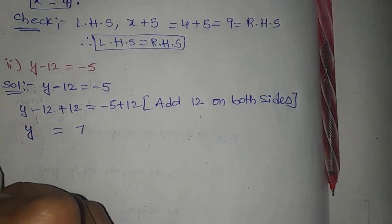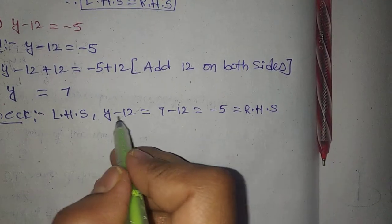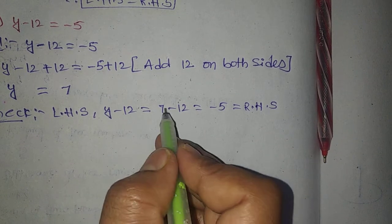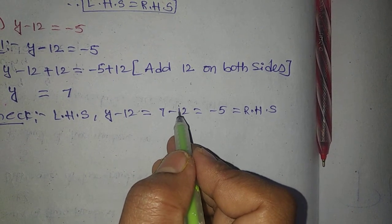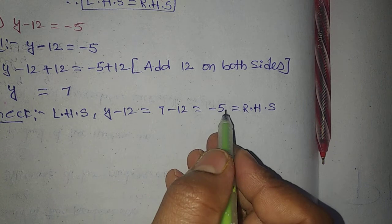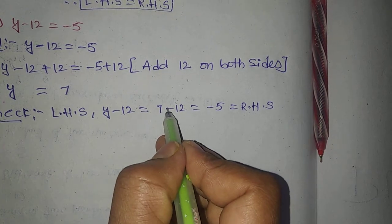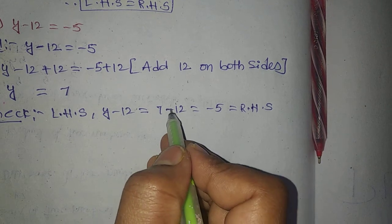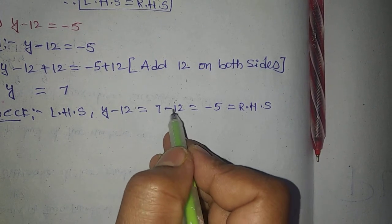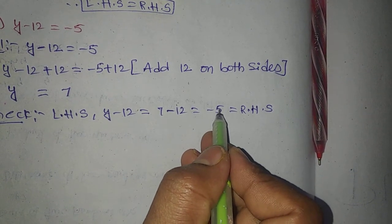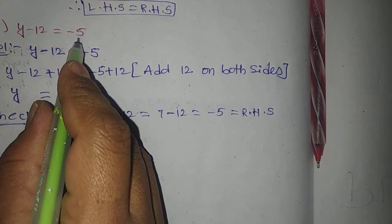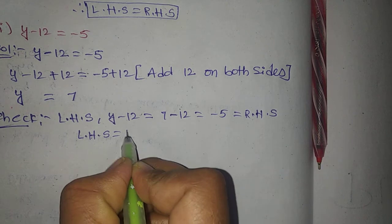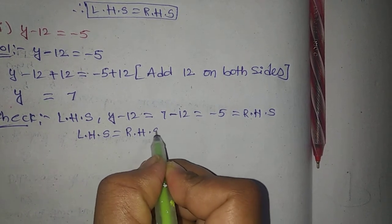So y is equal to 7. Next, check: y minus 12 is the LHS. Substitute y value 7: 7 minus 12. The bigger number is 12 with a negative sign, so the result is minus 5. RHS is minus 5. LHS equals RHS. y value is 7.